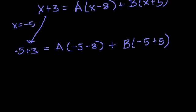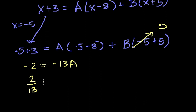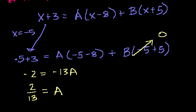So then you get minus 5 plus 3 is minus 2 is equal to, what is this? Minus 13a plus, this is 0, right? That's 0. Minus 5 plus 5 is 0, 0 times b is 0. And then you divide both sides by minus 13. You get, well negatives cancel out, you get 2 over 13 is equal to a.